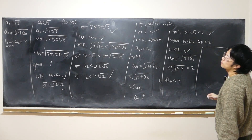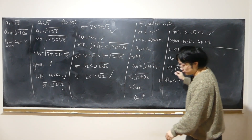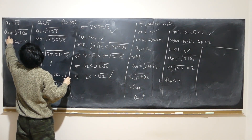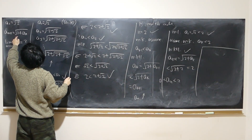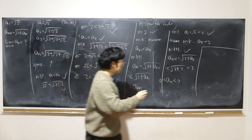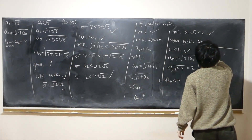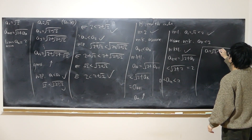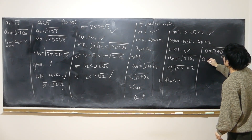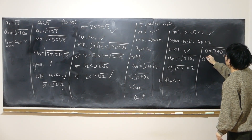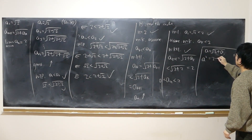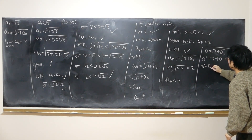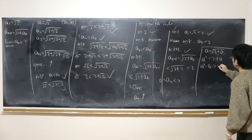The limit is found by taking the limit on both sides of the recurrence. If the limit is a, then a = √(2 + a). Squaring both sides gives a² = 2 + a, so a² − a − 2 = 0.